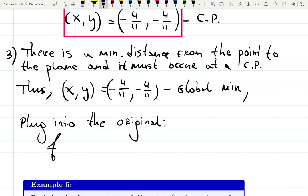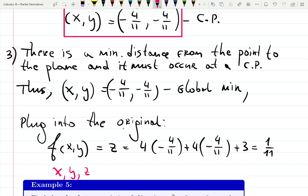F of x and y, which is z, will be 4 times (-4/11) plus 4 times (-4/11) plus 3, which is 1/11. So now you can write down the point (x, y, z) equals (-4/11, -4/11, 1/11). That is the final answer.